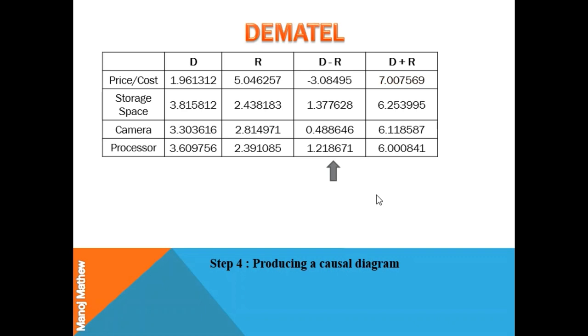D minus R tells us about the kind of relation between criteria. When D minus R value is positive, the criteria belongs to the cause group which is also known as dispatcher. Storage space, camera, and processor have a positive value of D minus R. So these criteria fall under cause group which indicates that these three criteria influence other criteria.